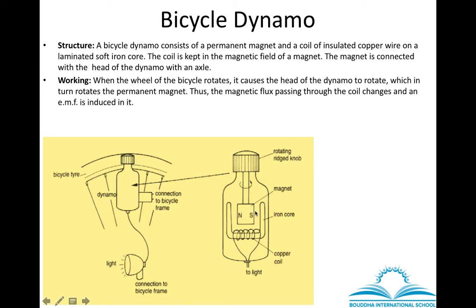When the wheel of the bicycle rotates, since the head of the bicycle dynamo is joined at the wheel, the head of the dynamo also rotates. When it rotates, the magnet starts rotating, and when the magnet rotates, the magnetic flux — the magnetic lines of force — starts changing because of the rotation. When the magnetic flux changes, electrons start flowing in the wire, and the flow of electrons means current. Because of this, the bulb connected to the dynamo starts glowing, and EMF — electromotive force, or current — is induced.